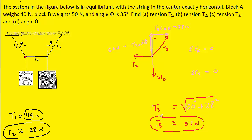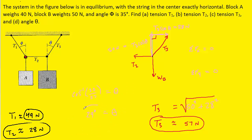Finally, we find the angle theta using the equation T3 cosine theta equals 50. Substituting T3 as 57 newtons, we get 50 equals 57 times cosine of theta. Dividing both sides by 57 and taking the inverse cosine of that fraction gives us approximately 29 degrees for theta. This is the correct answer to part D.